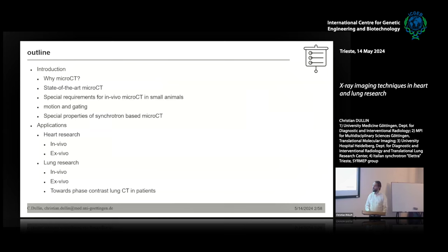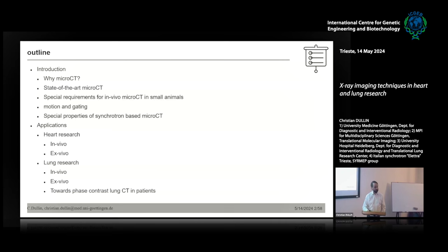I will show a tiny bit of introduction — why MicroCT, what's currently the state-of-the-art, what are the special requirements for small animals, how we deal with motion in the animal while imaging, and what are the special properties of synchrotron MicroCT. You have a synchrotron here in Trieste and I think you can do very nice work with that. Then I show you applications through the 20 years of small animal imaging I've done, structured into heart and lung, and also into in vivo and ex vivo. And lastly, what we plan to develop here at the synchrotron in Trieste to do lung imaging in patients in the future.